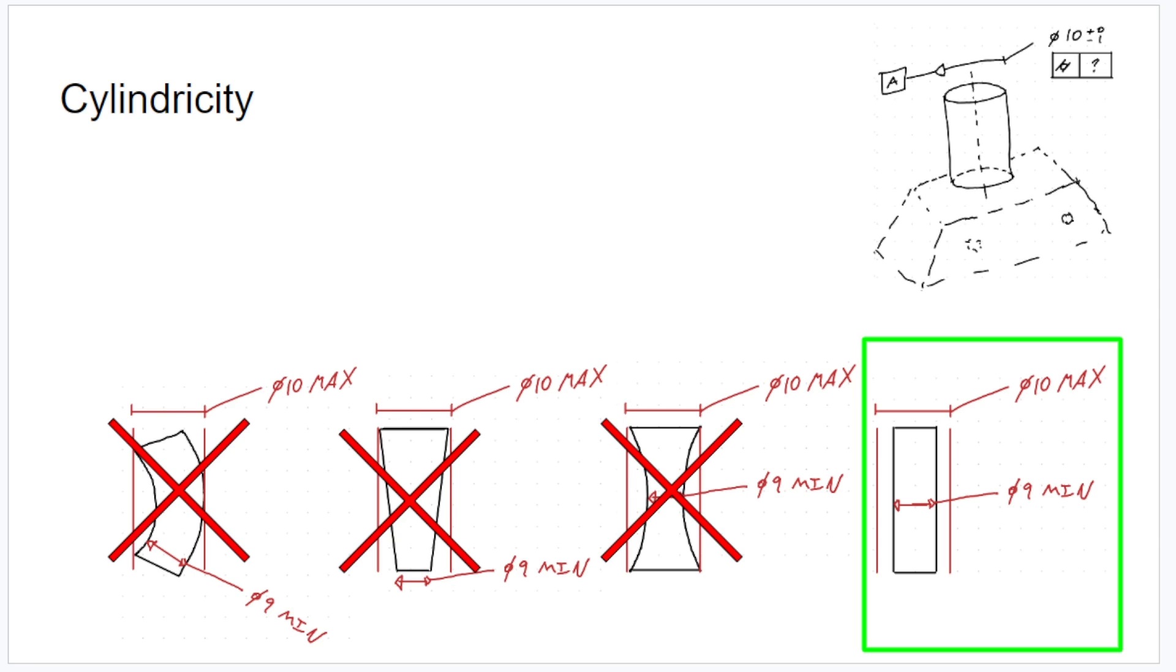Cylindricity is the most restrictive form tolerance. All of these types of errors are out. You need that surface to fit within the two coaxial cylinders separated by the given tolerance. So this is quite a restrictive way to tolerance a cylindrical feature.